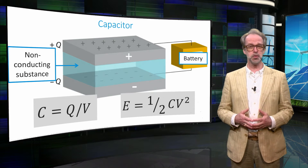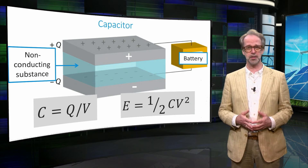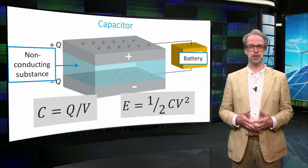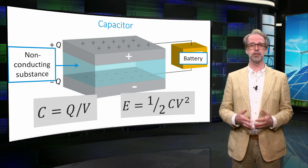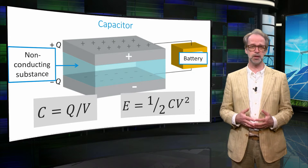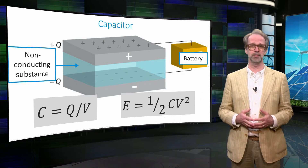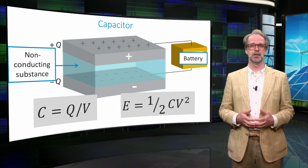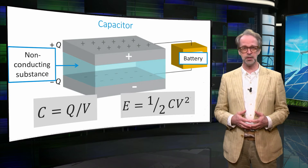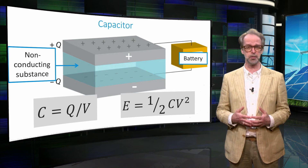When you want to use the energy again, you connect the two metal plates and the electrical charge is released. The big advantage of a capacitor is that it can generate an enormous amount of power, albeit only for a short amount of time. The large power achieved is due to the fact that the energy is generated by redistribution of the electrons only.